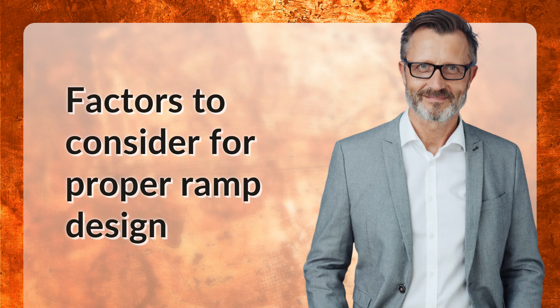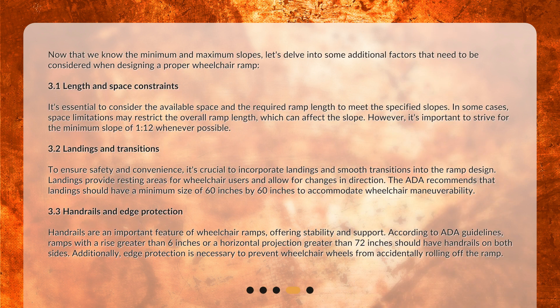Factors to consider for proper ramp design. Now that we know the minimum and maximum slopes, let's delve into some additional factors that need to be considered when designing a proper wheelchair ramp. 3.1 Length and Space Constraints: It's essential to consider the available space and the required ramp length to meet the specified slopes. In some cases, space limitations may restrict the overall ramp length, which can affect the slope. However, it's important to strive for the minimum slope of 1:12 whenever possible.